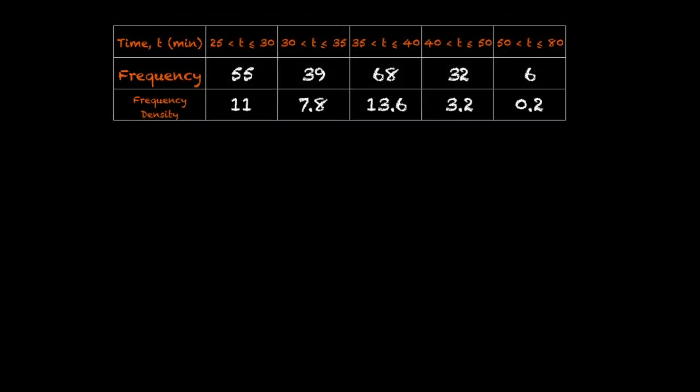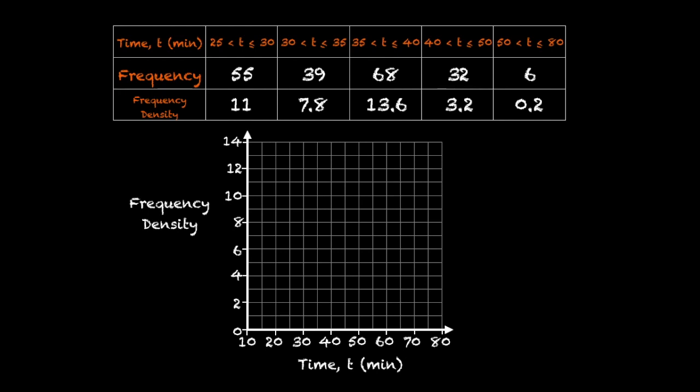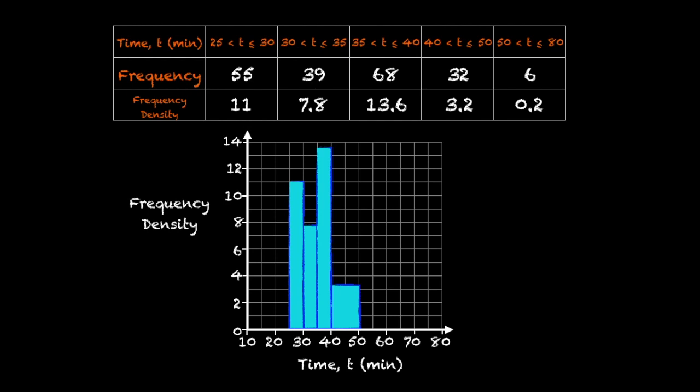So now that we have the frequency density for each group, we can go ahead and plot this histogram. So our first bar is grouped between 25 and 30 and its frequency density is 11. Our second bar between 30 and 35 has a frequency density of 7.8. Our third bar between 35 and 40 has a frequency density of 13.6. And our next bar between 40 and 50 has a frequency density of 3.2. And finally, our last bar between 50 and 80 has a frequency density of 0.2.